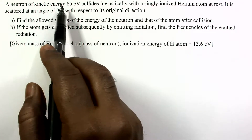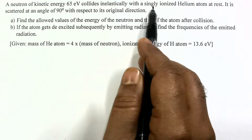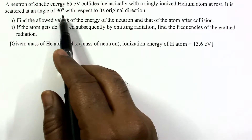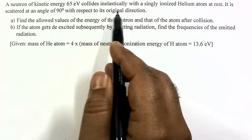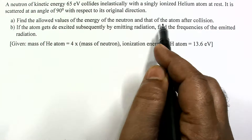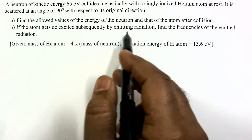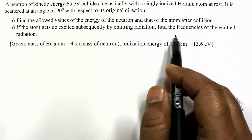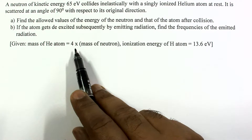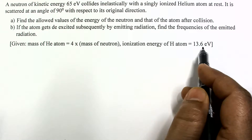In this question, a neutron of kinetic energy 65 electron volt collides inelastically with a single ionized helium atom at rest. It is scattered at an angle of 90 degrees with respect to its original direction. We have to find the allowed values of the energy of the neutron and that of the atom after the collision. If the atom gets de-excited subsequently by emitting radiation, we also have to find the frequencies of the emitted radiation. Given that the mass of helium atom is equal to 4 times the mass of neutron, and ionization energy of hydrogen atom is equal to 13.6 electron volt.